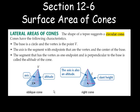Surface area of cones. A cone is like a circular pyramid. The shape of a teepee suggests a regular cone. Cones have the following characteristics. The base is a circle and the vertex is at point V. The axis is a segment with endpoints that are the vertex and the center of the base. The segment that has the vertex as one endpoint and is perpendicular to the base is called the altitude of the cone.